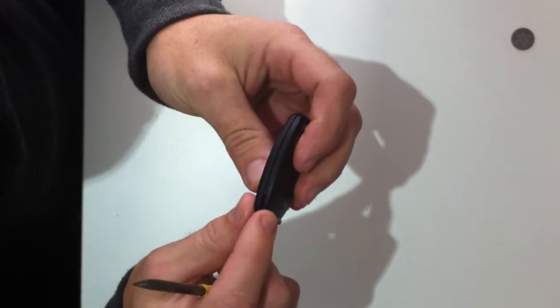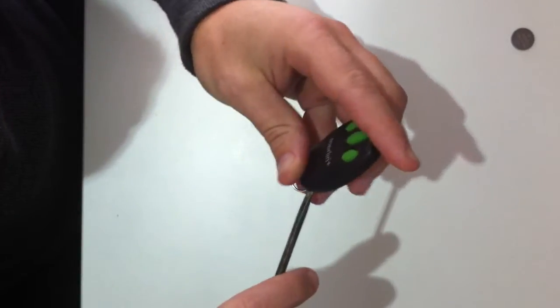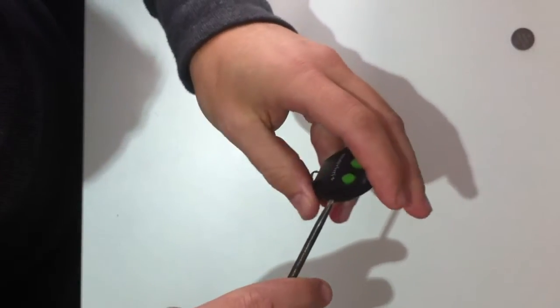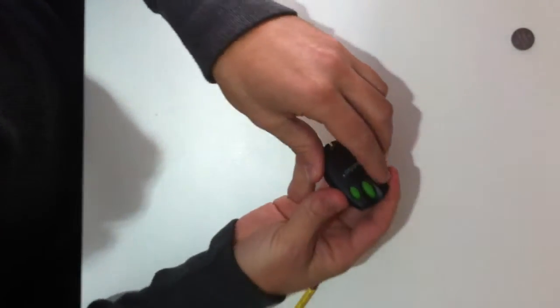On the side of the Merlin remote, there's a little hole here where you can put your screwdriver in to pop the remote open. It comes apart fairly easily when you do that.